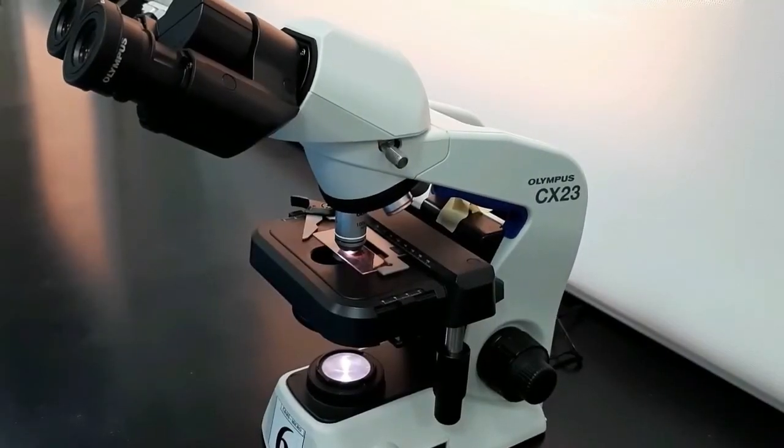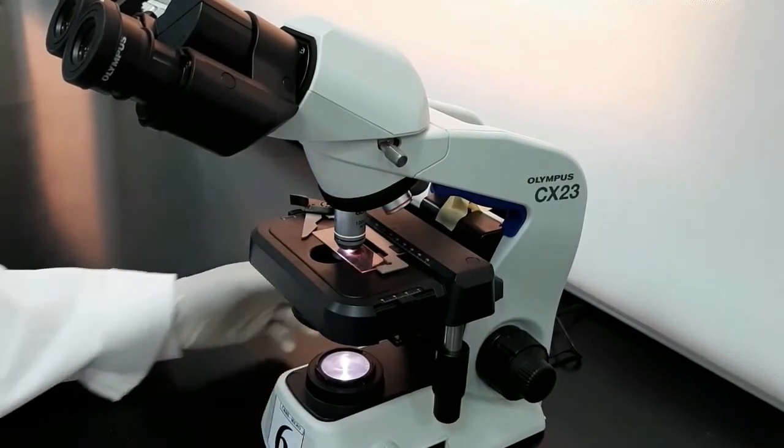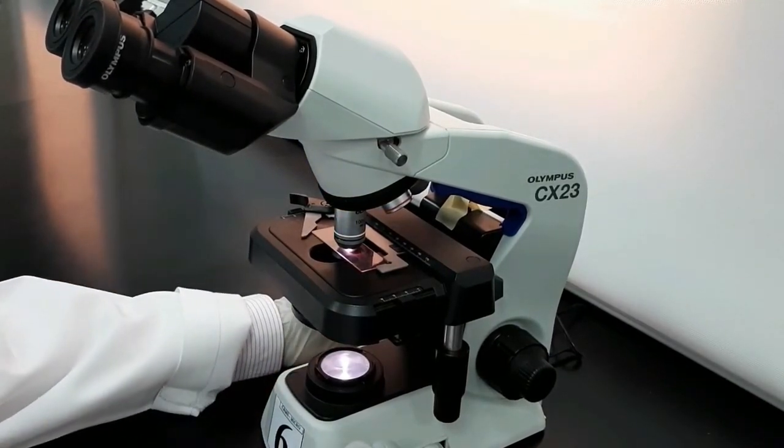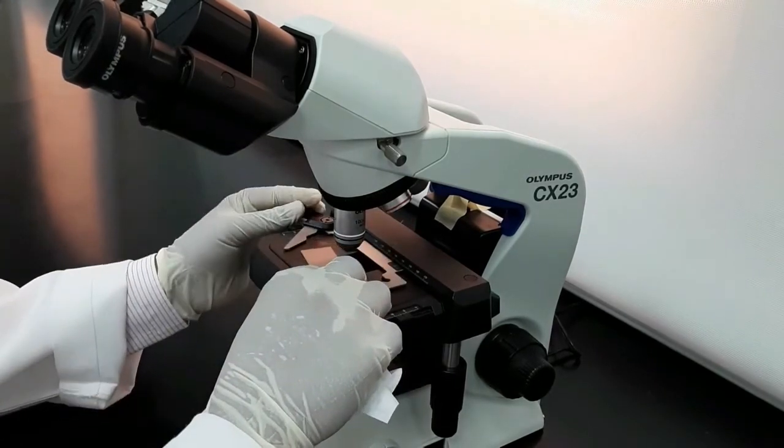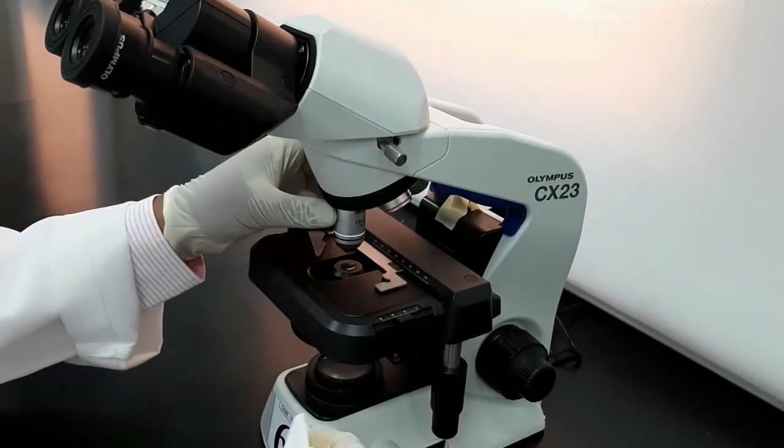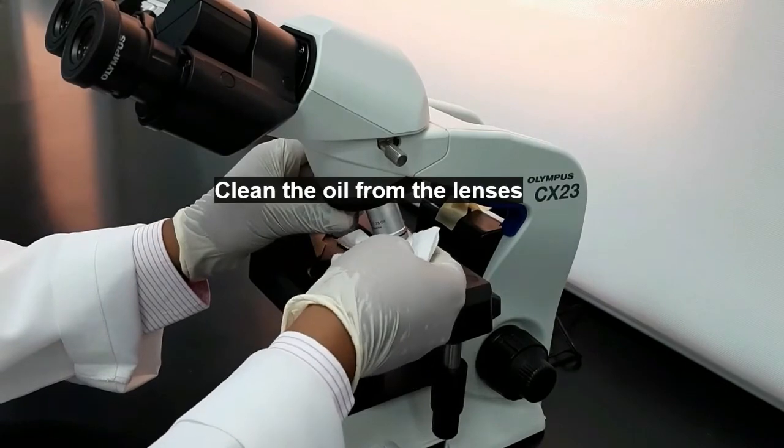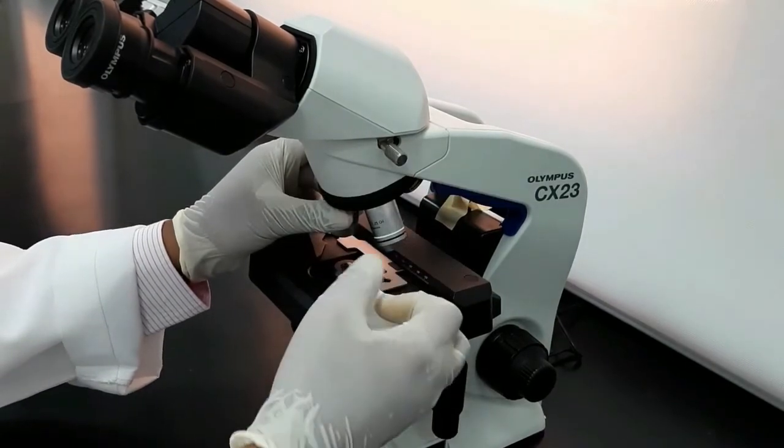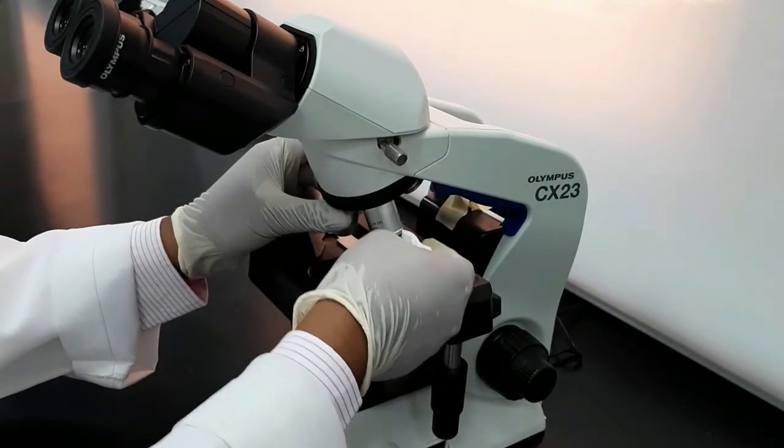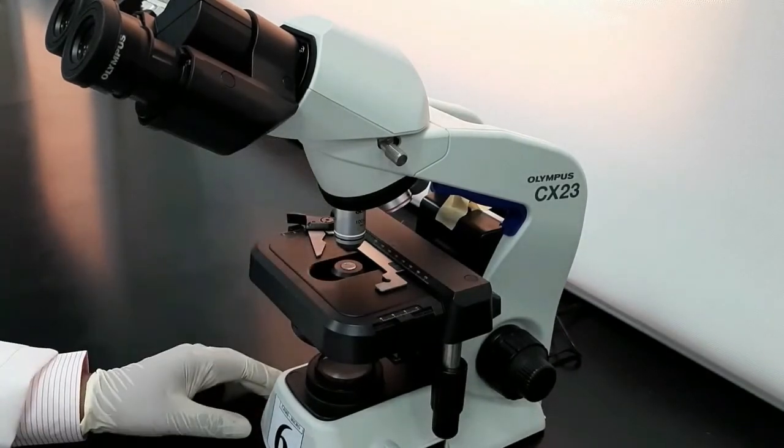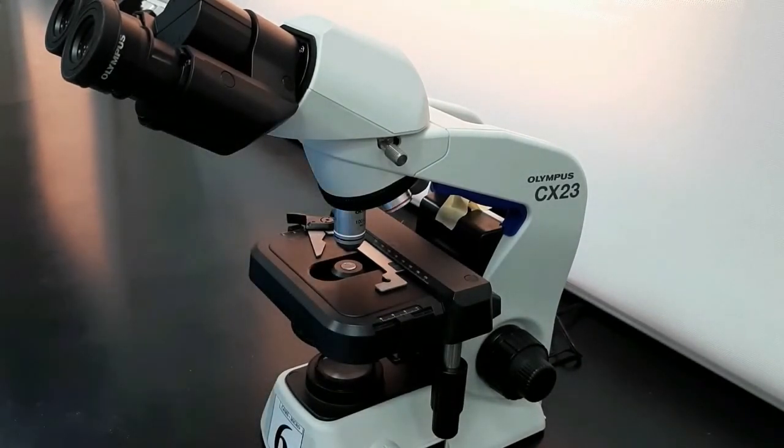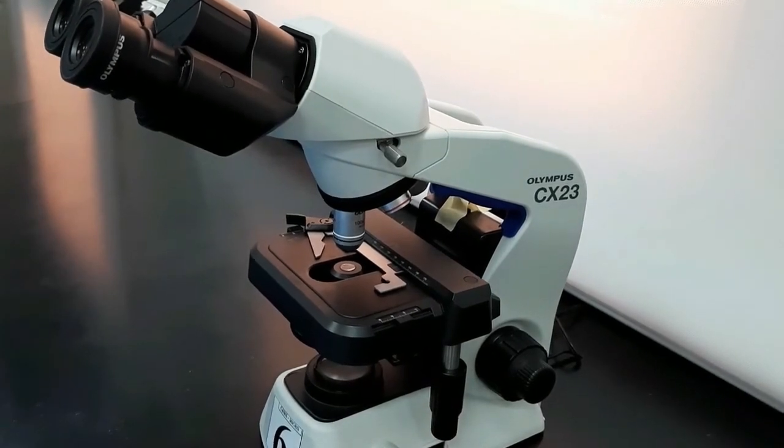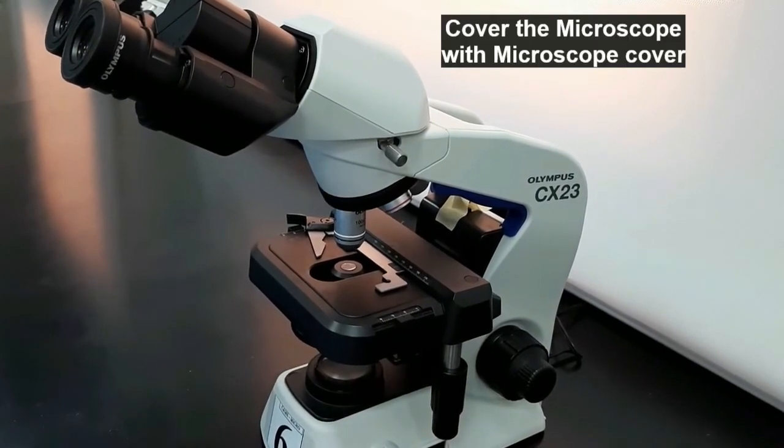Once you finish your procedure, draw what you observe, like the shape of the bacteria, the size of the bacteria, and the arrangements. After that, remove the slide and clean the lens with lens paper or special tissue. Then cover the microscope with the microscope cover and keep the microscope in the proper place. I hope you understand the procedure. Thank you.